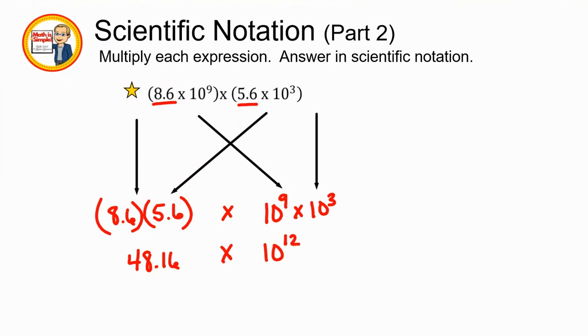So I'm going to go ahead and make my number smaller because 48 is way too big. But 4.816 is just the right size. When I make it smaller, I make my exponent larger. So it's going to be 10 to the 13th power.